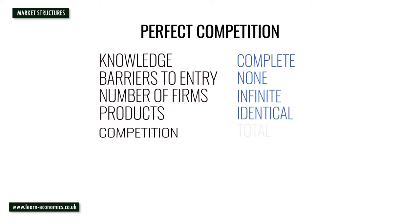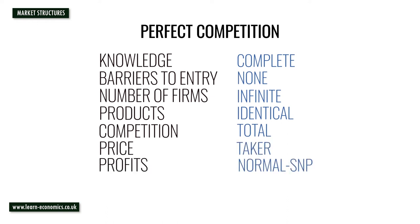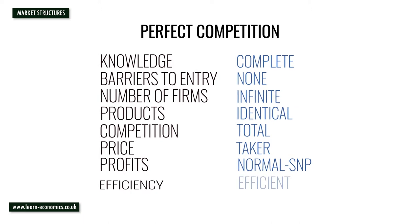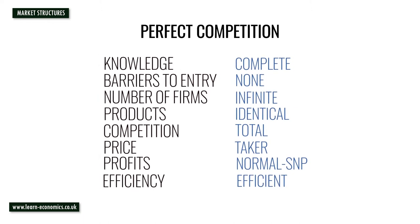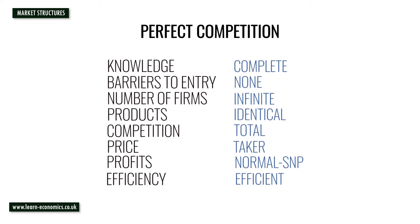Supernormal profits are available in the short run but not the long run. Firms are allocatively efficient in both the short run and long run, but only productively efficient in the long run, and welfare is maximized.